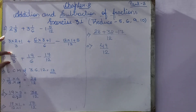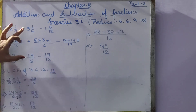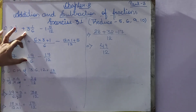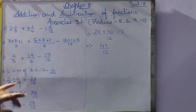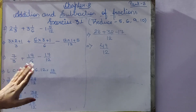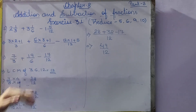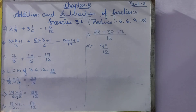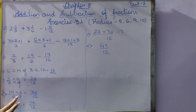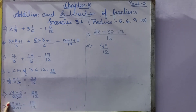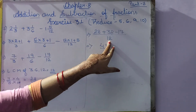So we have converted to improper fractions: 7 by 3, 19 by 6, and minus 17 by 12. All 3 numbers are different denominators. We take out the LCM of 3, 6, and 12, which is 12. We make the common denominator: 7 by 3 is 28 by 12, 19 by 6 is 38 by 12, and 17 by 12 stays as 17 by 12. So the denominator is 12.